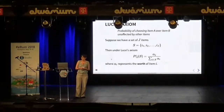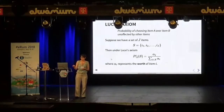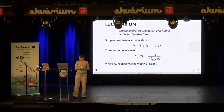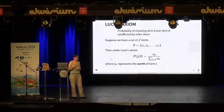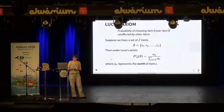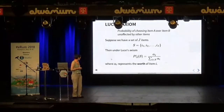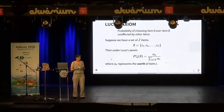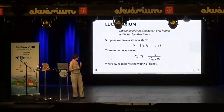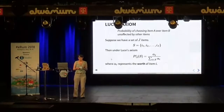It turns out that a mathematical consequence of this axiom is that if we have a set of J items — I1, I2, up to IJ — then the probability of selecting any particular item J from that set is given by a parameter alpha_J representing the worth of the selected item. That's the ratio of that against the sum of the item worth for all the other items in the set.